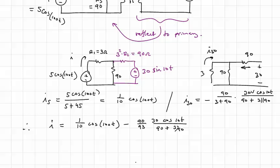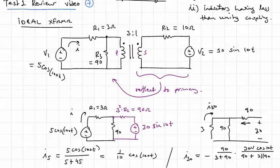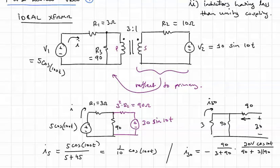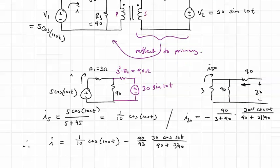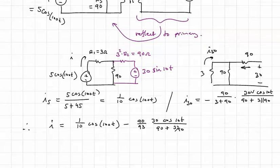So that's how you would solve a circuit having ideal transformer. And then once you have the current, you can calculate all other quantities of interest. You could calculate voltages, or if you're asked about what is the power in a particular resistor, then you can just calculate the power from the voltage across the resistor current through it.